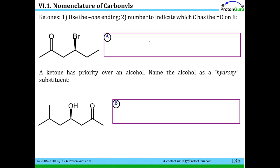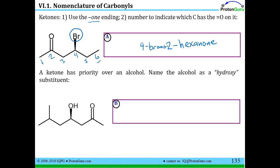The naming of ketones is done similarly to alcohols, but ketones use the 'one' ending instead of the 'ol' ending. We number the chain to give the ketone the lowest possible number, so it's going to be a 2. With a six-carbon chain, it's a 2-hexanone. Outside the parent chain we have a bromine at position four, giving us 4-bromo-2-hexanone. Since there's a chiral center, we assign the configuration as S-4-bromo-2-hexanone.